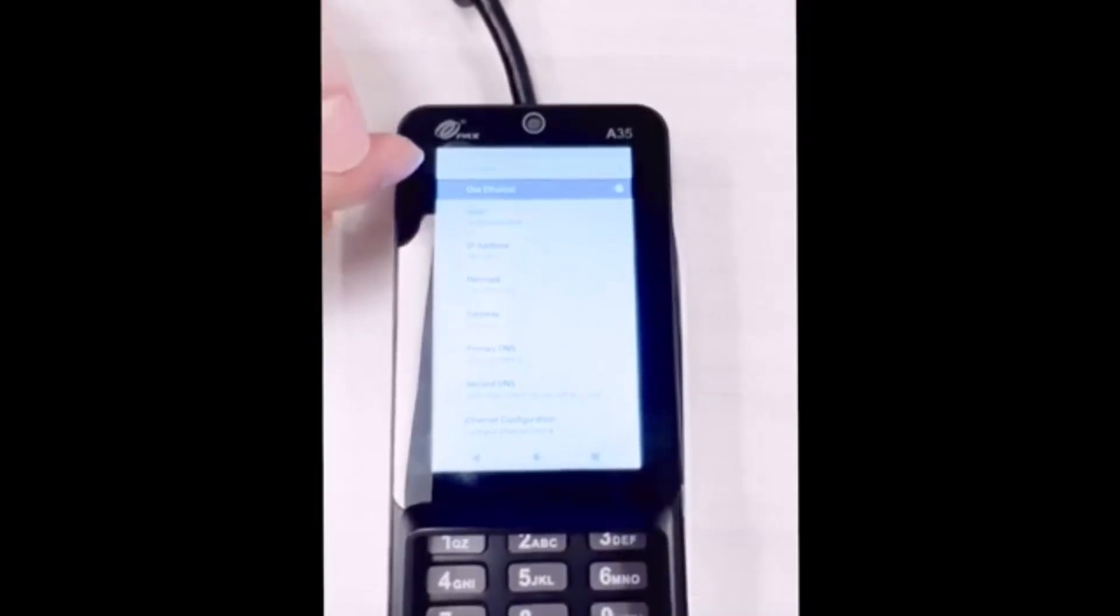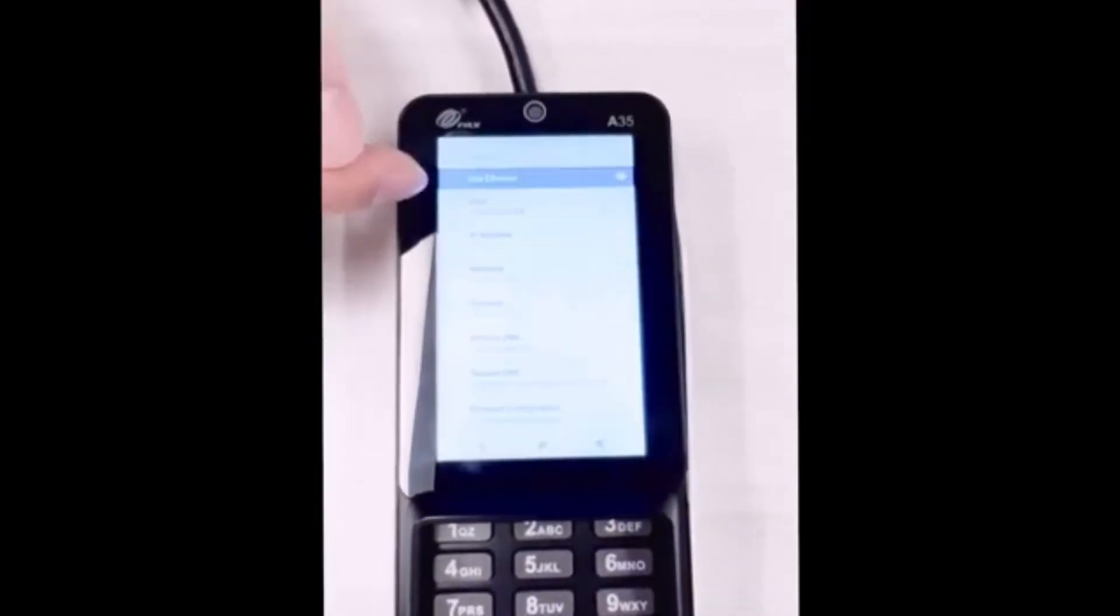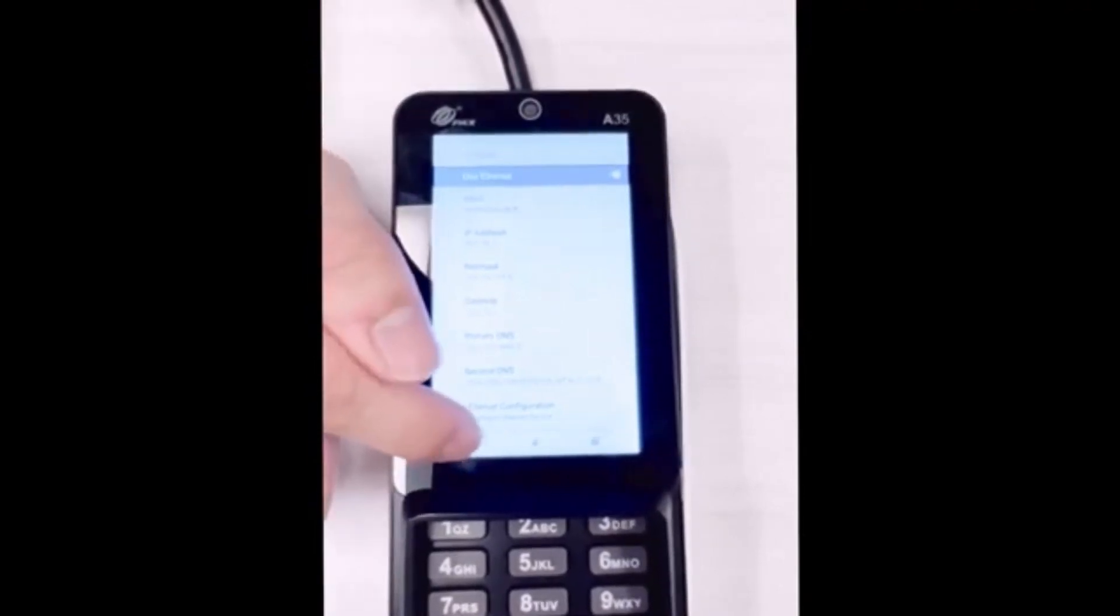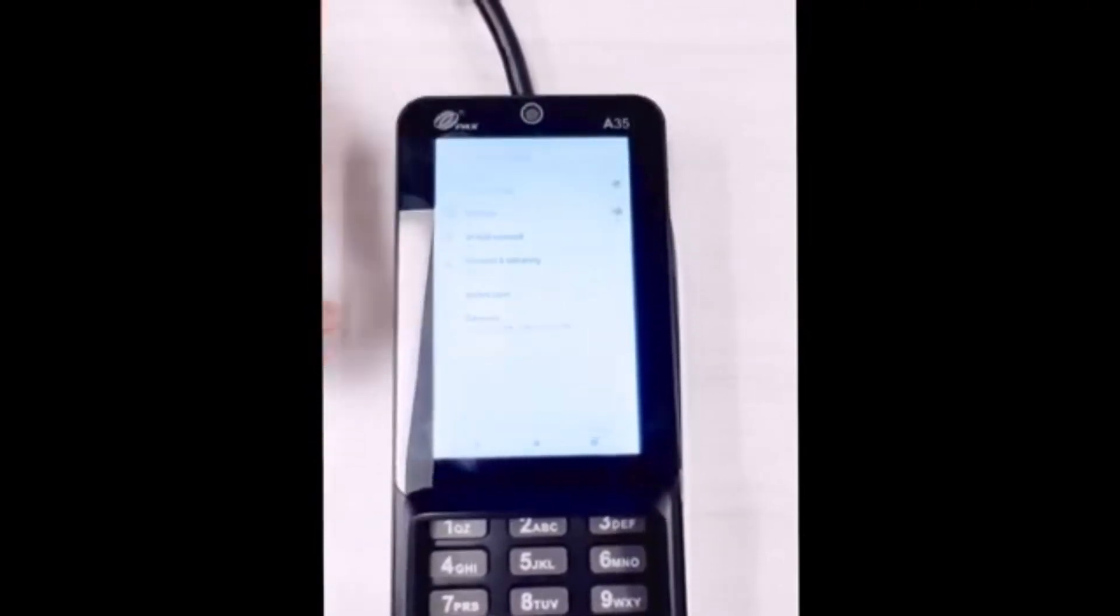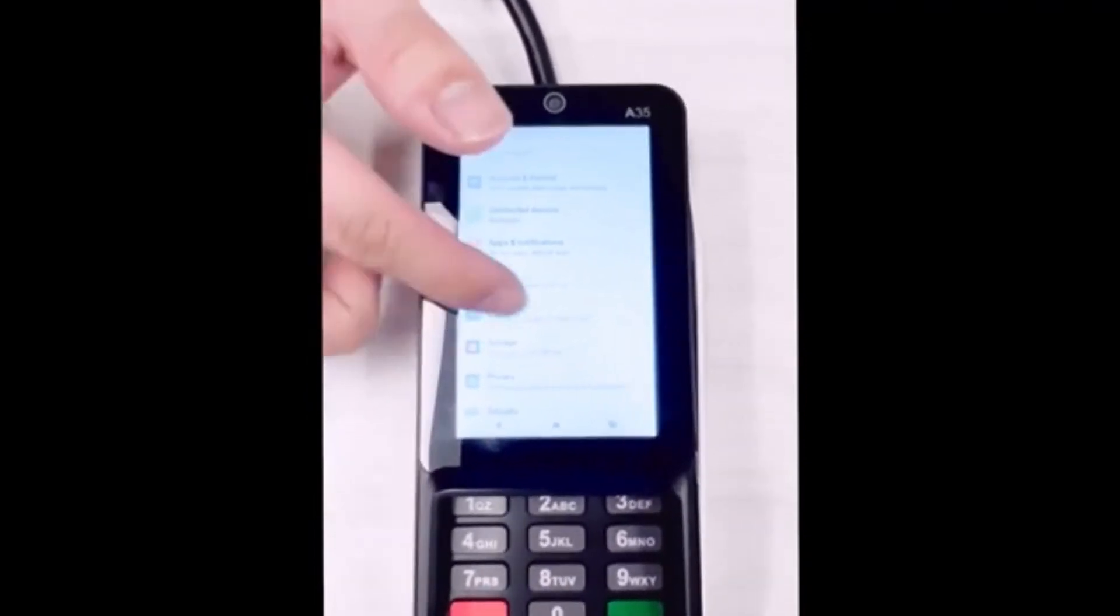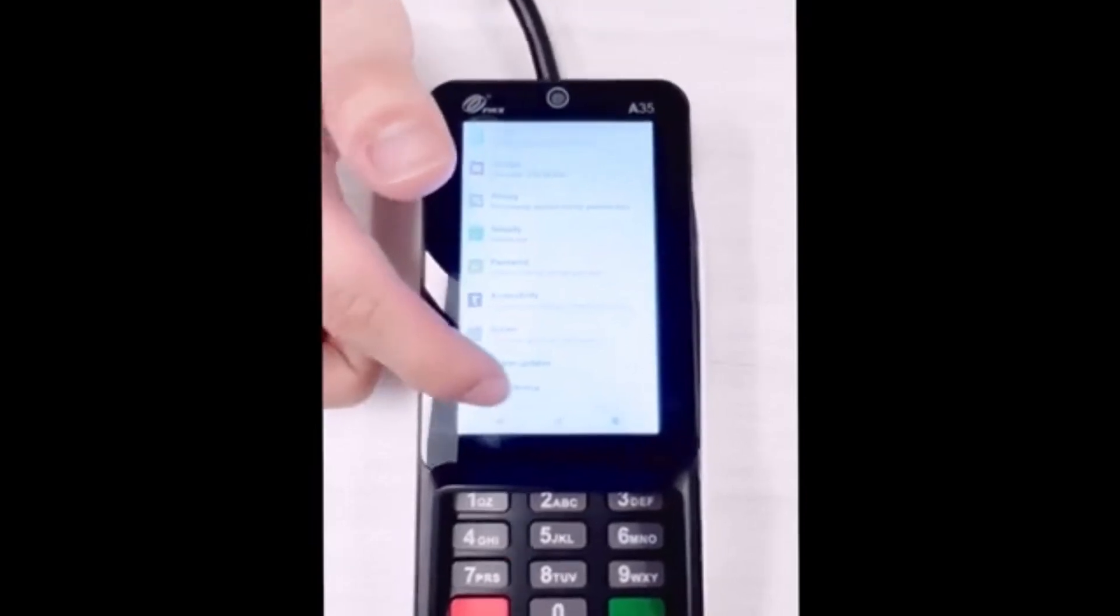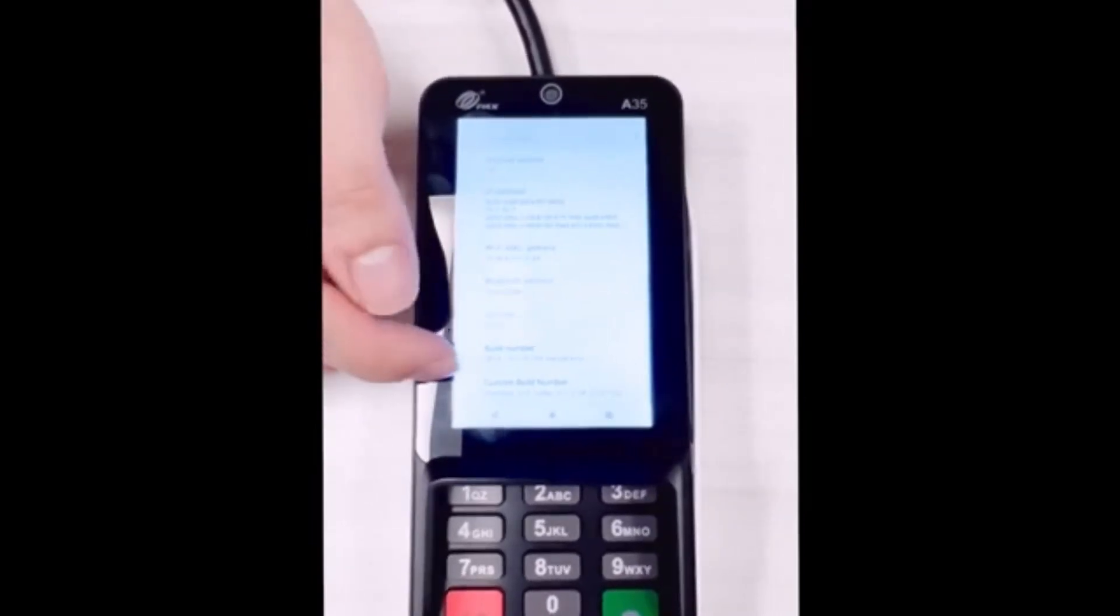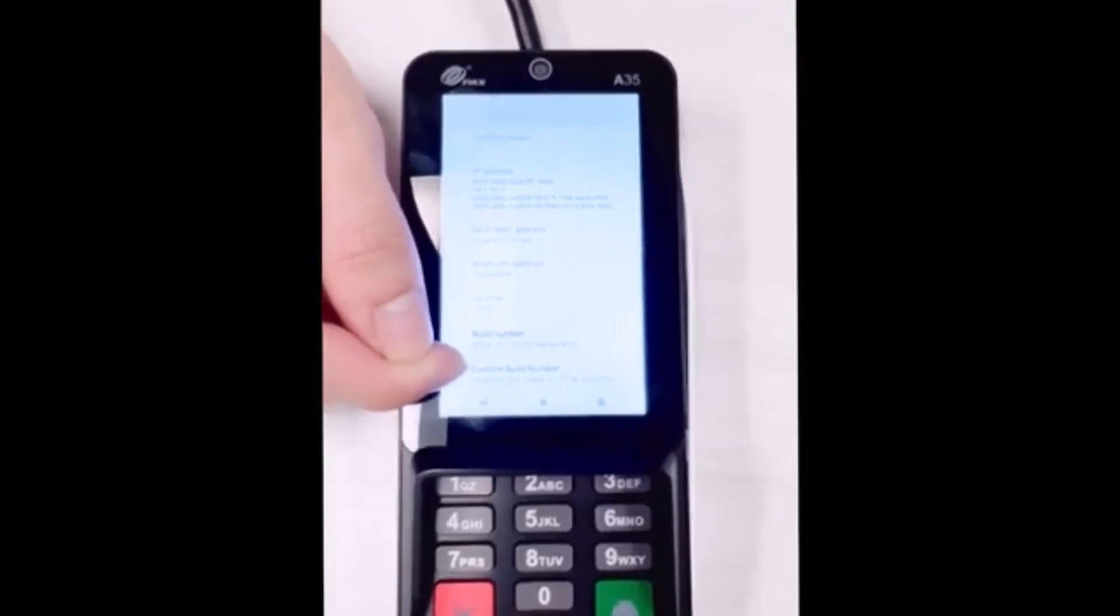If it does not generate, you're going to look for something in these settings, which I will point out here. So we'll go ahead and go back. If you do not see any IP, you'll go ahead and scroll all the way to the very bottom and click about device. You'll go ahead and scroll all the way to the bottom, where you see custom build number.